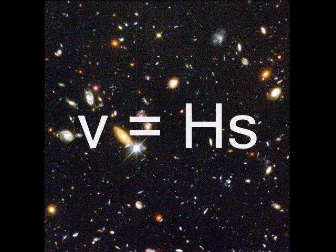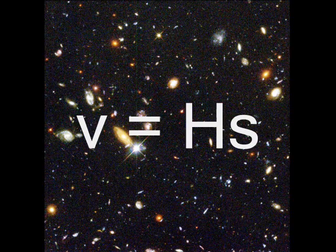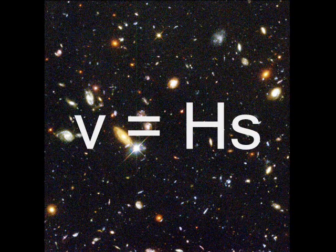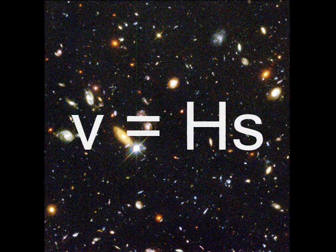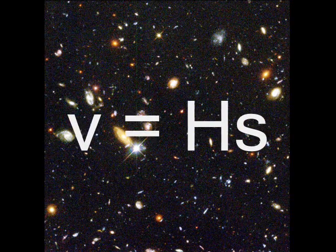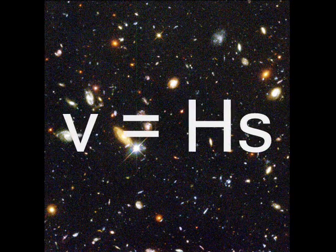This is Hubble's equation for the expansion of the universe. V is the speed of a galaxy that's rushing away from us. S is the distance to that galaxy. H is a constant of proportionality known as Hubble's constant.